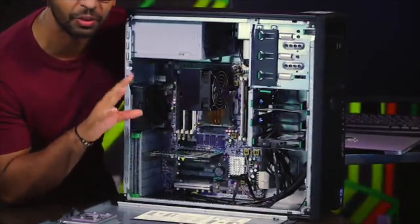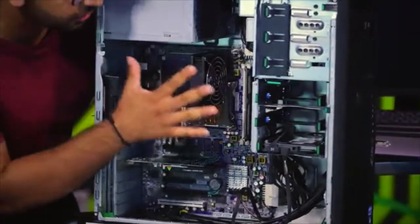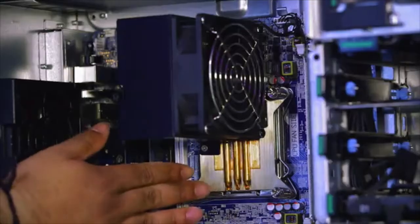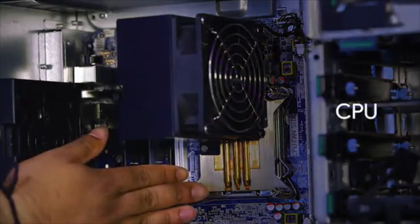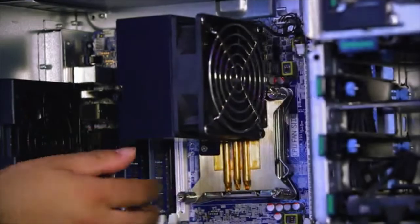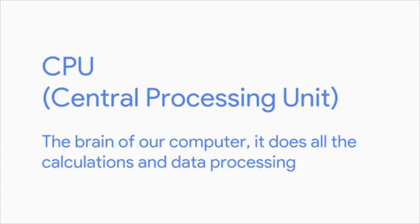Let's start with a quick tour, then we'll dive deeper into each of these parts in the next lesson. Right here, this component is a CPU, or central processing unit, which is covered by this heat sink. You can think of the CPU as the brain of our computer. The CPU does all the calculations and data processing.